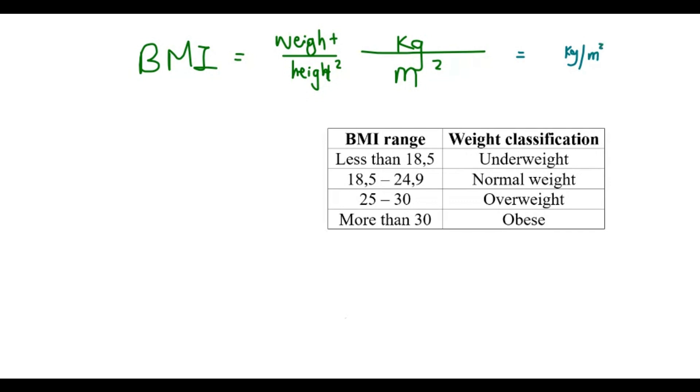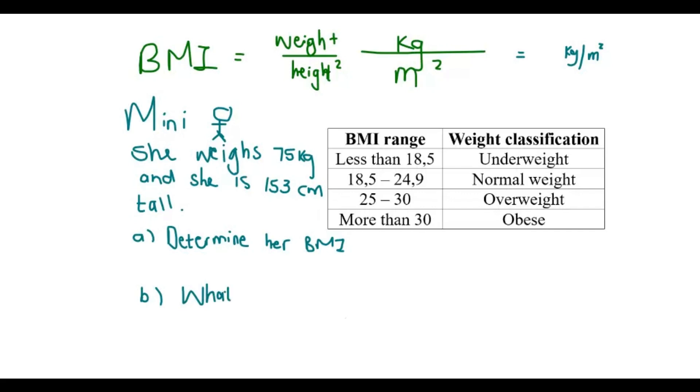So, let's look at a little example. Here I have Minnie. Little Minnie me. Minnie me is not so little. She weighs 75 kilograms and she is 153 centimeters short or tall. Now, the first question here, and you've got to notice the difference in the questions. Determine her BMI or calculate her BMI. Same thing. And the second question here would then be, what is her weight status? What is her weight status or in which category does she fall?